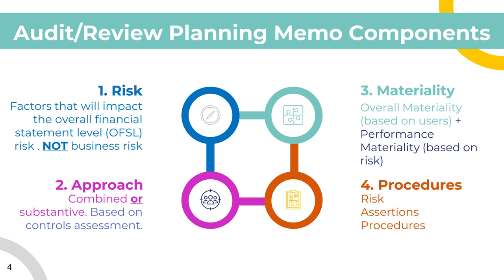When talking about materiality, this is the comfort level that auditors are willing to bear until they say something is wrong with the statement. For example, if the overall materiality is $1 million, once an error in total is over $1 million, the auditors will say the statements are materially off — meaning it will likely impact the user's decisions. The key thing about selecting overall materiality is that it's only based on users, not on risk. Performance materiality is used for specific line items and is normally around 60 to 80% of the overall materiality, and this time it is based on the risk of that line item.